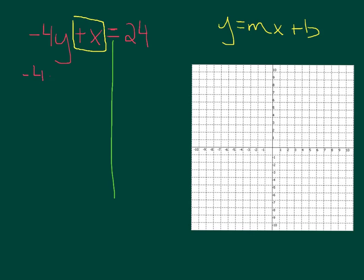So -4y + x = 24, and we have to subtract x from both sides. So -4y = 24 - x. Now we have to divide everything by -4.